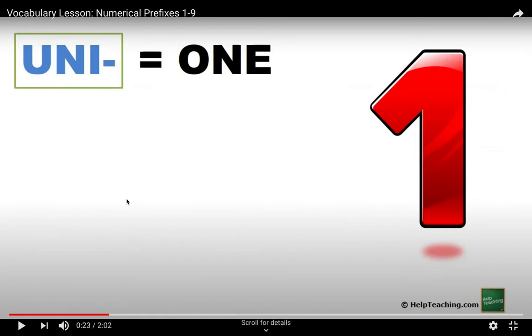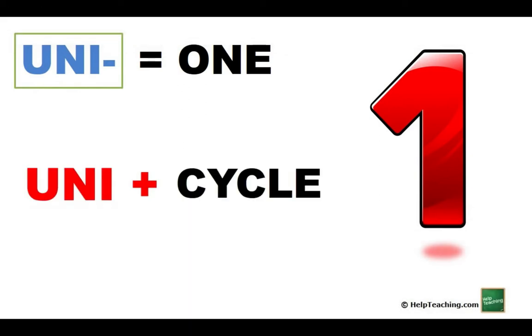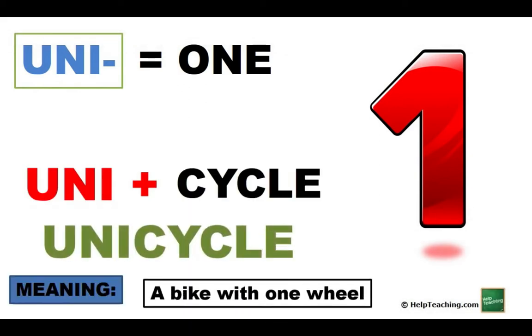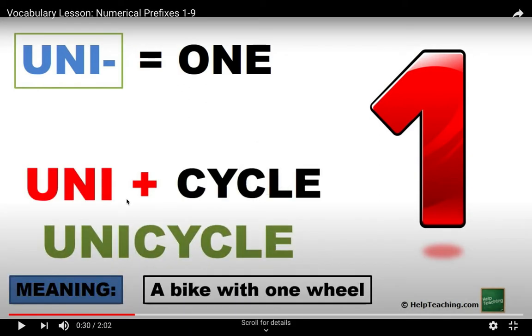Uni is one. Uni plus cycle equals unicycle, that means a bike with one wheel. Think about if you've ever seen somebody rolling around on a bike with one wheel. If you haven't, you can look it up on the internet. It's actually spelled exactly the way that it's written right here, uni and then cycle.